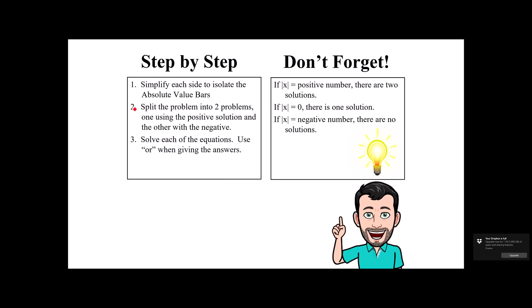Keep in mind, you're going to want to simplify each side to isolate the absolute value bars first. Then, if there's an expression inside the bars, you're going to split it into two problems and solve them both, making sure that you use the word or in your final answer. Also, if you have the absolute value of x equals a positive number, there's two solutions. If you think of it in terms of a number line and distance from zero, you're going to have a solution that goes to the right and one that goes to the left. If x equals zero, there's only one solution. And if the absolute value of x is a negative number, there are no solutions.